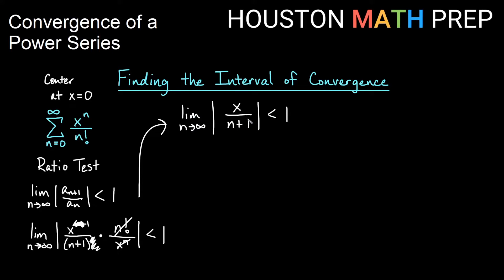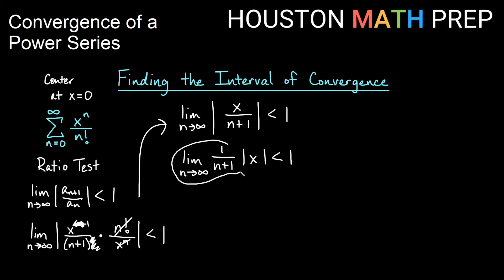This limit has n plus 1 in the denominator, so we can pull that out. As n approaches infinity, the limit of 1 over (n plus 1) is 0. So we end up with 0 times the absolute value of x less than 1. That's true for any real number x, since 0 times anything is 0, which is less than 1. So this series converges for all real numbers.